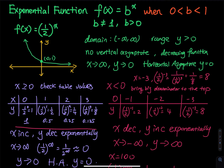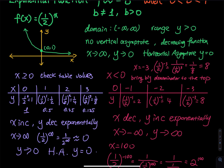As x increases, y decreases exponentially — x gets bigger and bigger, y gets smaller and smaller. When x is very large, like infinity, (1/2)^∞ means multiplying 1/2 by itself many times. The numerator stays 1, but the denominator becomes 2 raised to a very large power, which is a large number. One divided by a very large number is very close to zero, which is why y approaches zero as x approaches infinity.